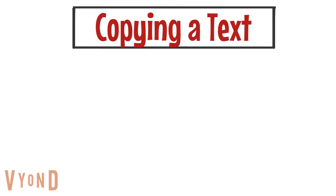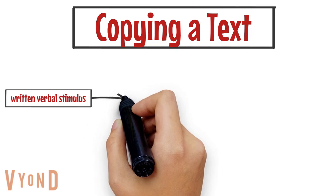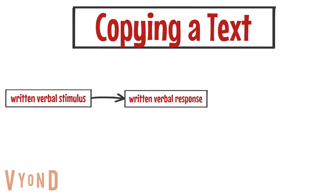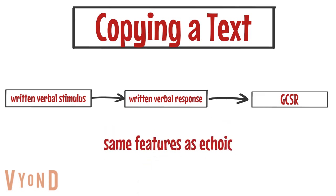The next verbal operant is copying a text. Skinner presented copying a text as a type of verbal behavior in which a written verbal stimulus has point-to-point correspondence and formal similarity with a written verbal response, which results in a generalized conditioned reinforcer. Because this relation shares the same defining features as echoic and imitation as it relates to sign language, the three are treated as one category: echoic.